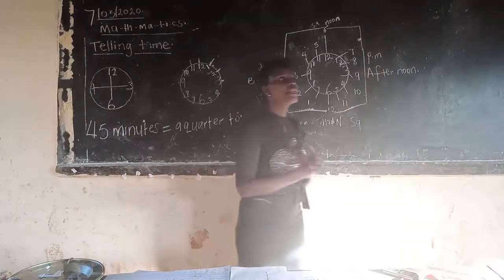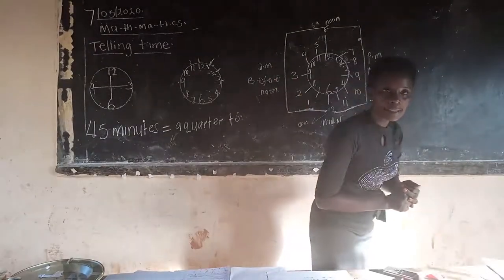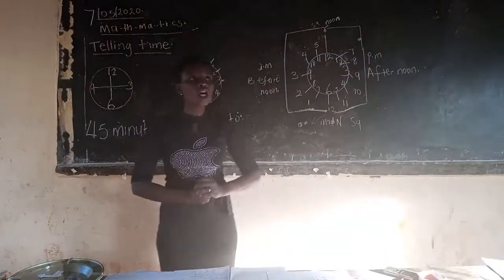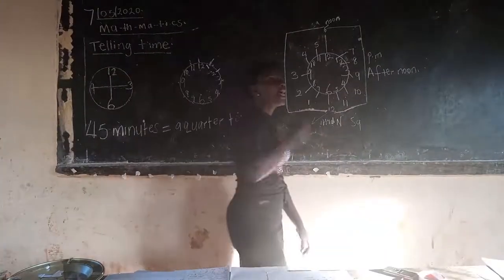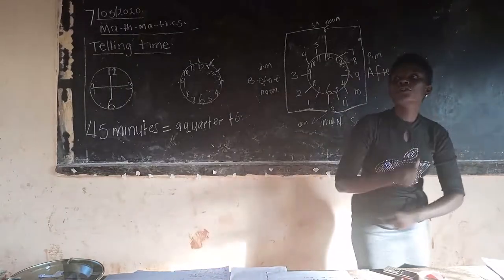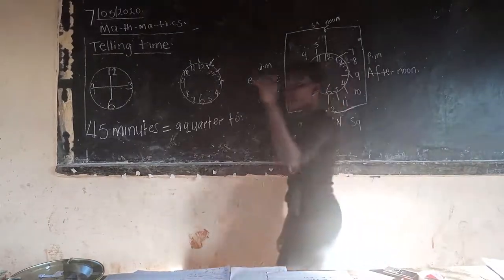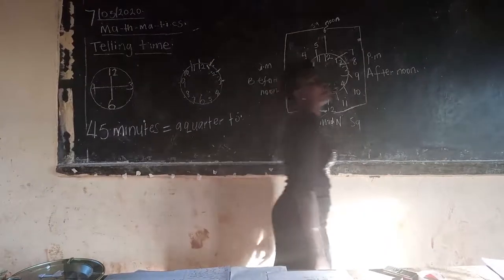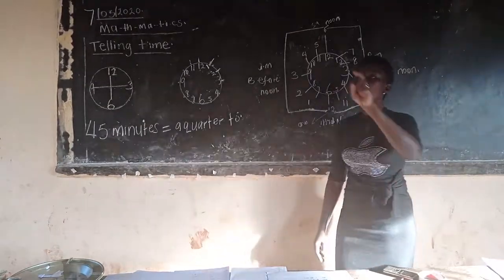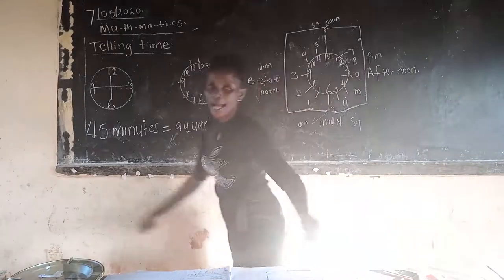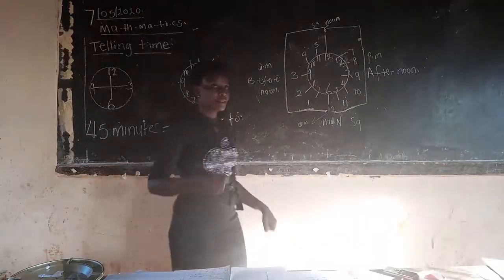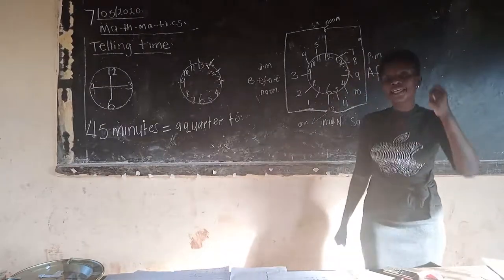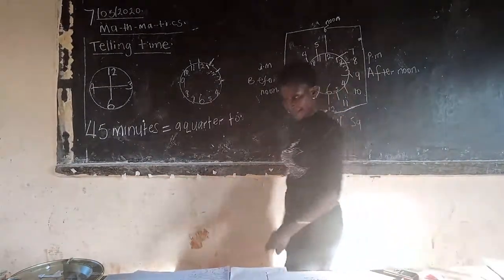How many minutes make a quarter past? Nice — 15 minutes make a quarter past. And how many minutes make a full hour? Right — 60 minutes make a full hour. And lastly, how many minutes make a half past? Lovely — 30 minutes make a half past.